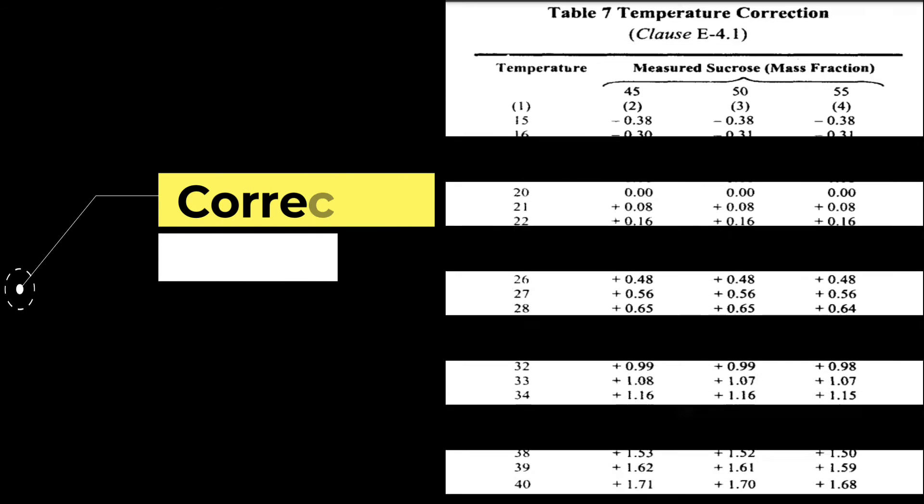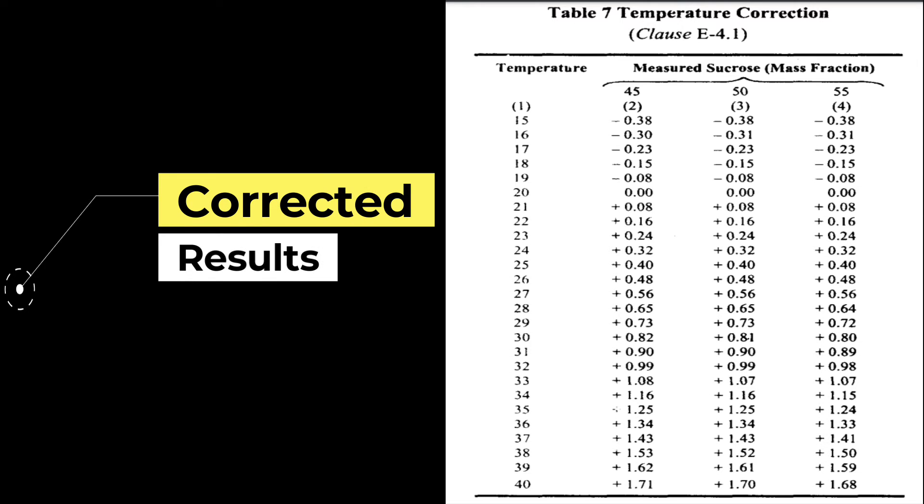If the sample is tested at other temperature than 20 degrees Celsius, use the temperature factor shown in the display and calculate the accurate Brix percentage accordingly.